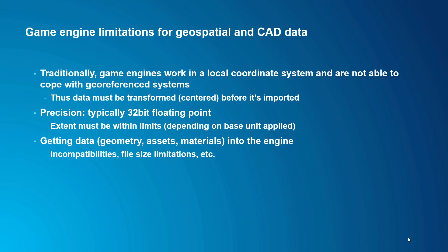Traditionally, game engines work in a local coordinate system and are not able to cope with georeferenced systems. That means your data first must be transformed, typically centered, before it's imported. Game engine floating point precision is typically only 32 bits, which means that your extent must be within these limits, otherwise you're going to get graphic artifacts. And then getting the data into the engine is not easy — there are incompatibilities with file formats, file size limitations, and so on.